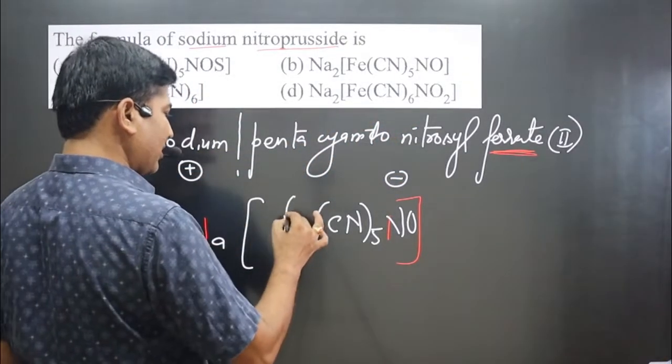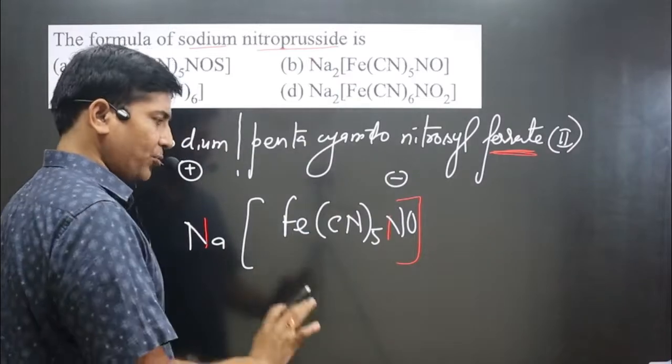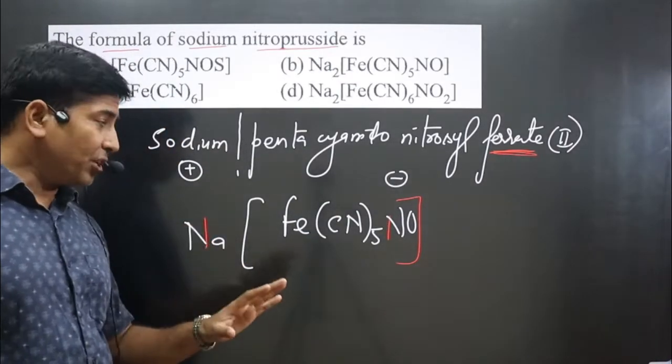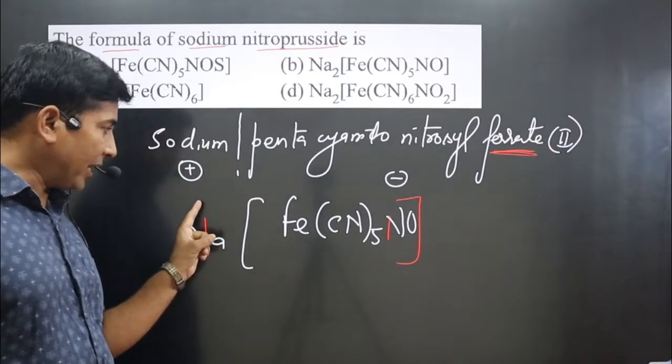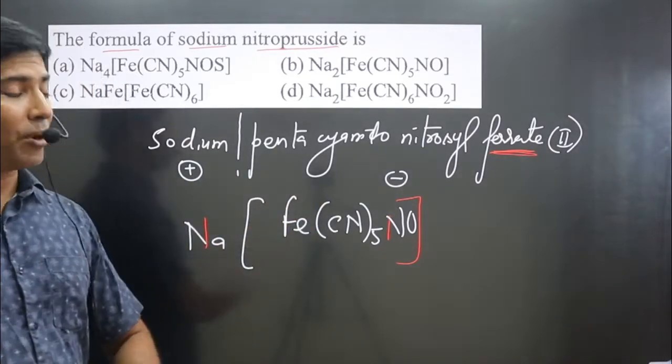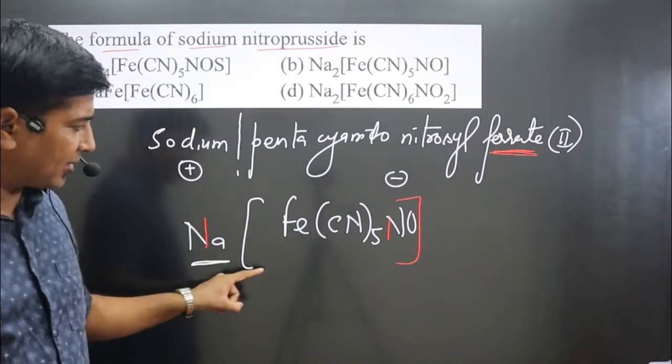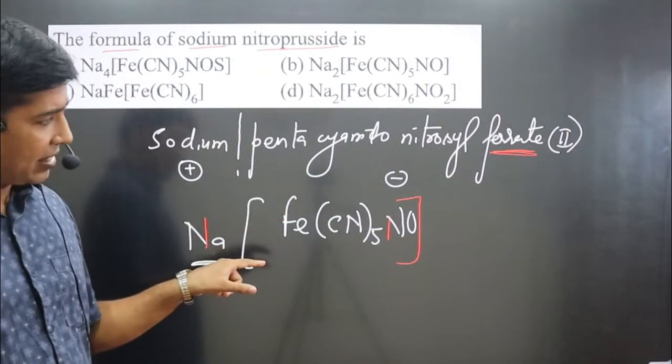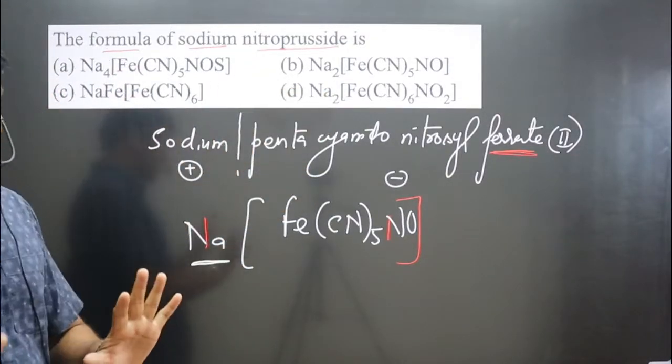Then ferrate is there, this is the central element, this is Fe we have, close bracket is there. Now pay attention very carefully. If we know the charge of cationic as well as anionic part, this is the cationic part and this entire portion is the anionic part. Then we can balance the charge and we can write the chemical formula.